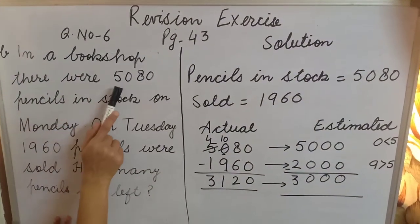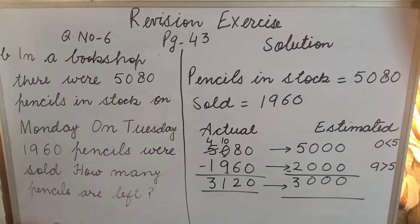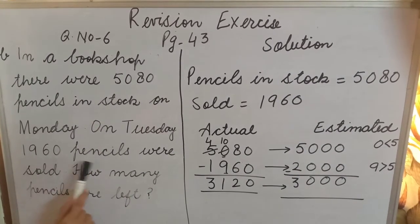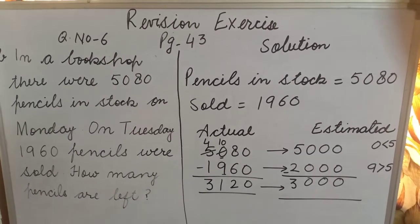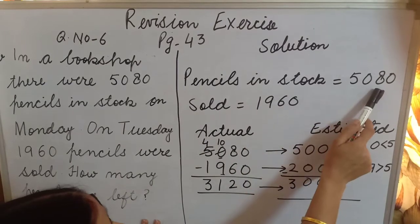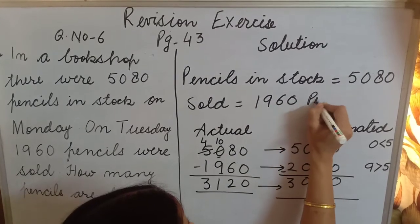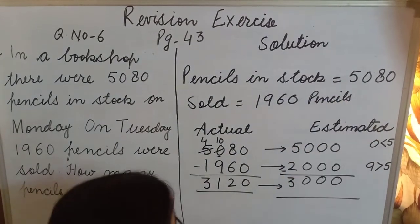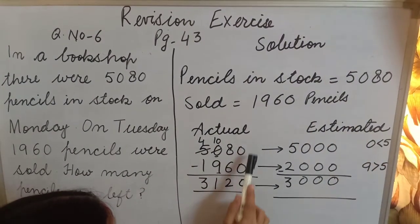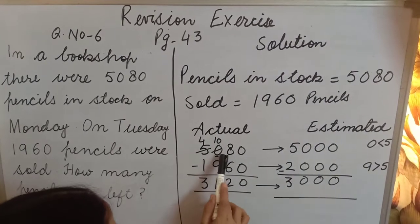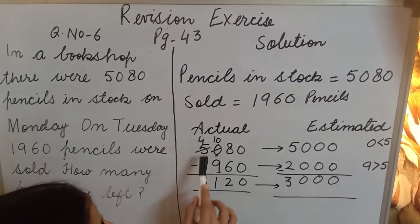Again, one more time you can see. In a book shop, there were 5,080 pencils in stock on Monday. On Tuesday, 1,960 pencils were sold. These were sold. How many pencils are left? Then pencils in stock: 5,080. Sold: 1,960 pencils. Now actual: 5,080 minus 1,960. 0 minus 0 is 0. 8 minus 6 is 2. 0 minus 9 not possible. Take borrow from this one, becomes 4, then 10. 10 minus 9 is 1. 4 minus 1 is 3.